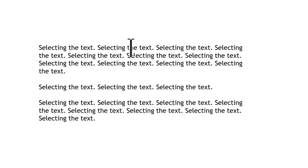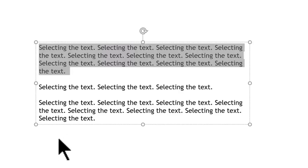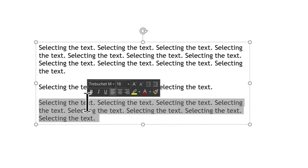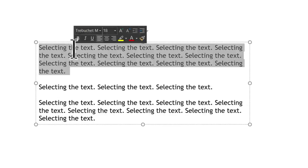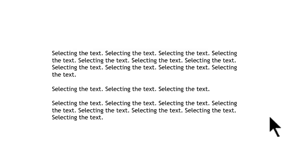The next thing that many people don't know is it's possible to select the entire paragraph by just triple-clicking. For example, let me go here — click-click-click — and I have my entire paragraph selected. I can do it again: click-click-click. So double-click to select a word and triple-click to select a paragraph.